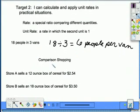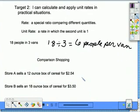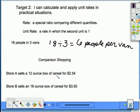We can use unit rates in comparison shopping. If I go to Store A, it sells a 12 ounce box of cereal for $2.54. When I go to Store B, I can buy an 18 ounce box of cereal for $3.50. I want to know which store is giving me the better price. What I can do is figure out how much I'm paying for 1 ounce of cereal, and then it's easy to compare.